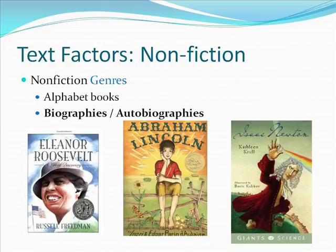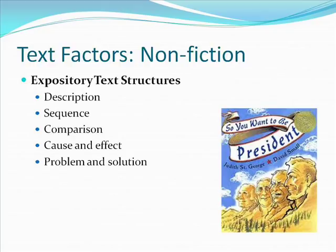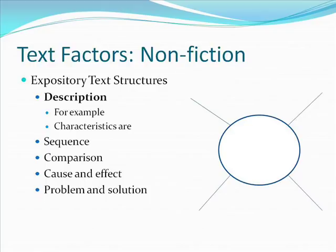Non-fiction books are organized in particular ways called expository text structures. When readers are aware of these patterns, it's easier to understand what they're reading. The most common expository text structures are description, sequence, comparison, cause and effect, and problem and solution. In description, the author describes a topic by listing characteristics, features, and examples. Phrases such as 'for example' and 'characteristics are' cue this structure. When students delineate any topic, they use description.